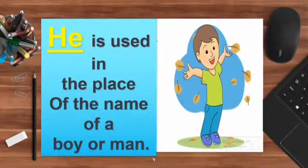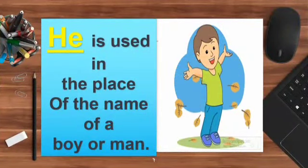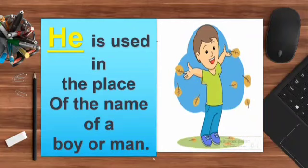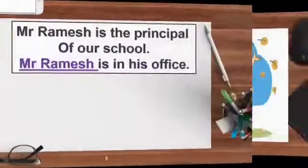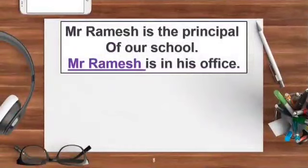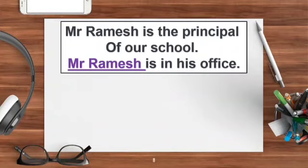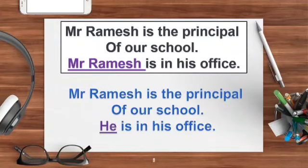Now next is he. He is used in the place of the name of a boy or a man. Let's see an example. Mr. Ramesh is the principal of our school. Mr. Ramesh is in his office. So children, as we already know, Mr. Ramesh is the name of a man. But we have repeated Mr. Ramesh in the second sentence also. So we can replace it with a pronoun. Mr. Ramesh is the principal of our school. He is in his office.